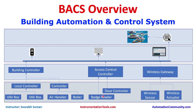Similarly, a building occupant scanning their identification badge at the badge reader results in the credentials being sent to the access controller. The access controller and application controller server then determine whether access should be granted or not. These are typical use cases for building automation systems.